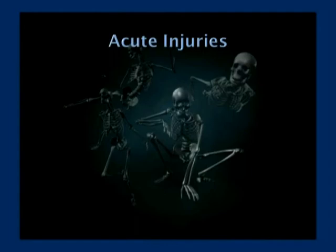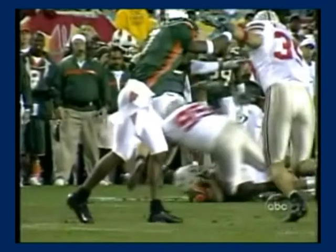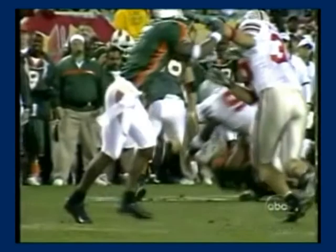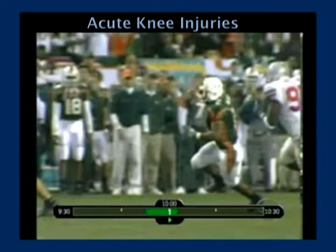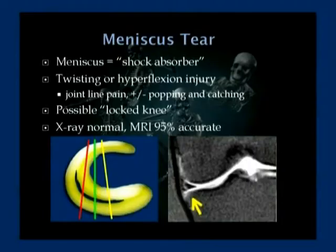Moving on to acute injuries. This slide shows a national college football championship — an example of an acute, sudden traumatic injury, as opposed to overuse injuries. Looking at acute knee injuries, we'll go over some anatomy. Tonight we'll focus on the meniscus — think of it as a shock absorber, with one on the inside and one on the outside of the knee. Another common injury is the ACL, or anterior cruciate ligament, which is very important for stability of the knee.